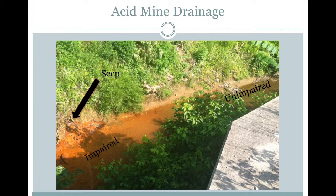As you can easily see, upstream of the seep the water is in good condition with a diverse aquatic community. Immediately downstream of the seep, the bottom of the stream is blanketed with iron hydroxides, or rust. There are few organisms found below the seep, as the pH is incredibly low — near 3 — and there is a tremendous amount of iron precipitates.